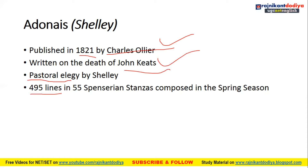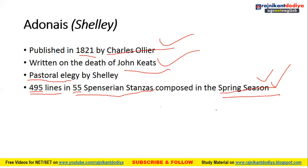Important facts about 'Adonais': it contains 495 lines and 55 Spenserian stanzas. Such numbers can be asked in exams. It was composed during the season of spring — this is also a fact that can be tested. So remember: 55 Spenserian stanzas, 495 total lines, composed in spring.